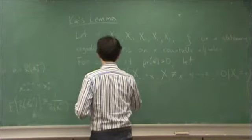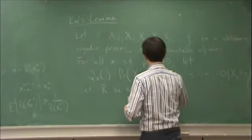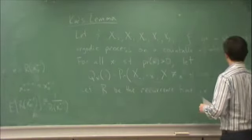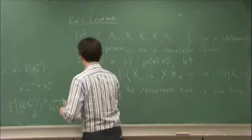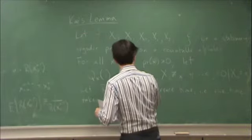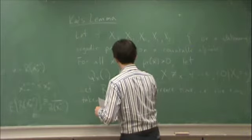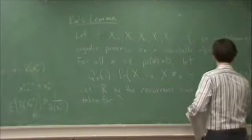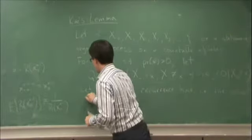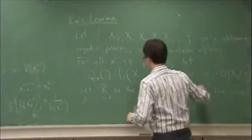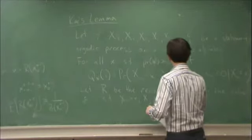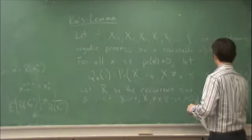Let R be the recurrence time. I.e., the value of i such that this is true: x_{-i} equals x, x_j is not x for all -i < j < 0, given that x_0 is equal to x.